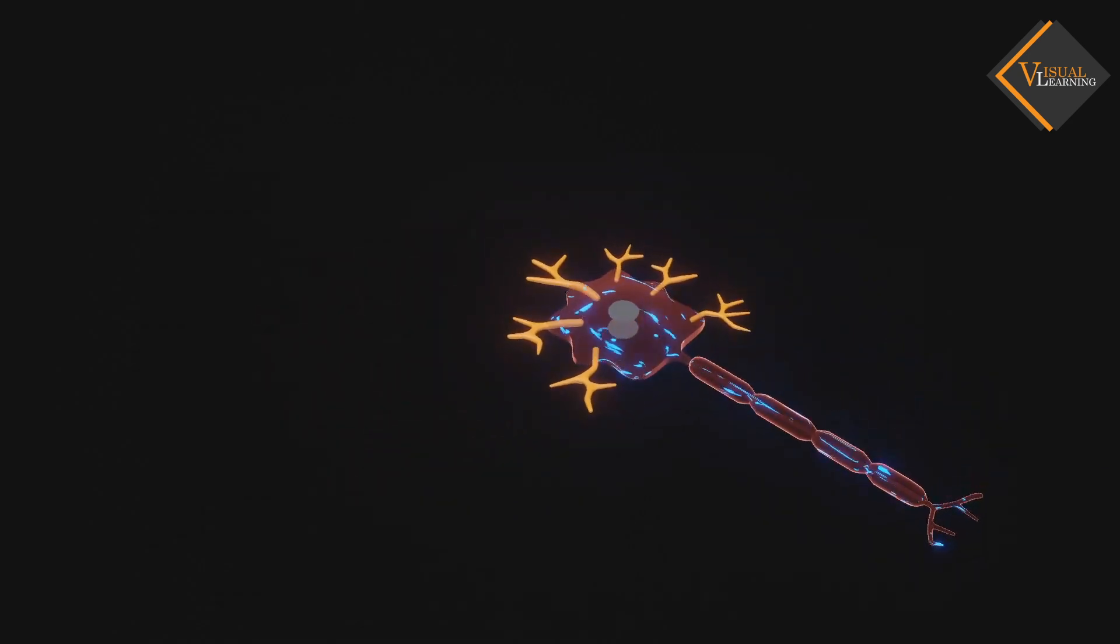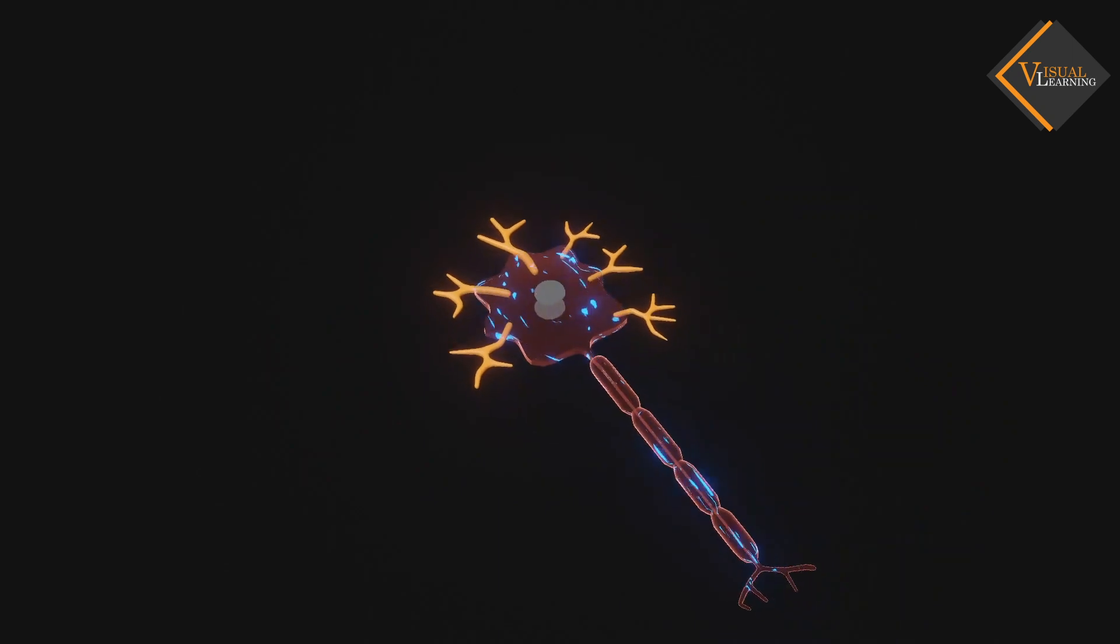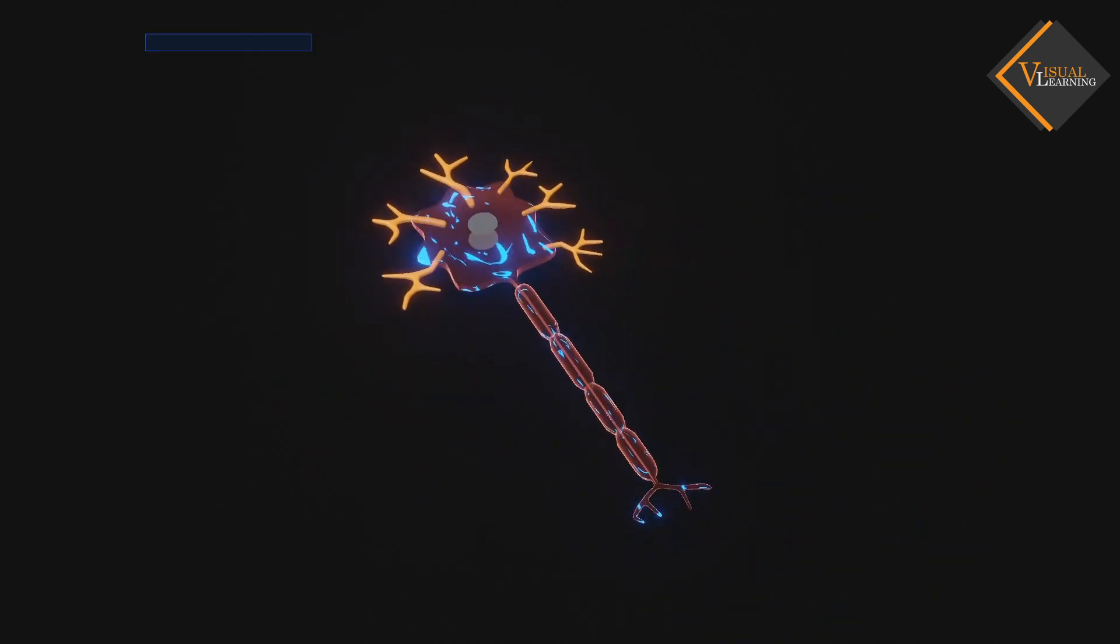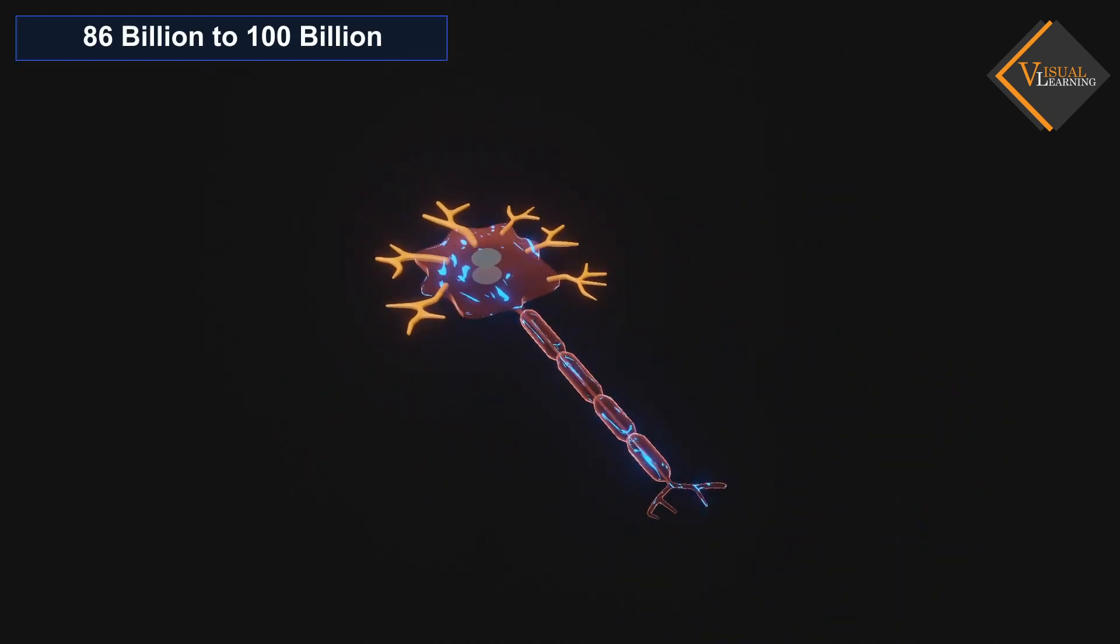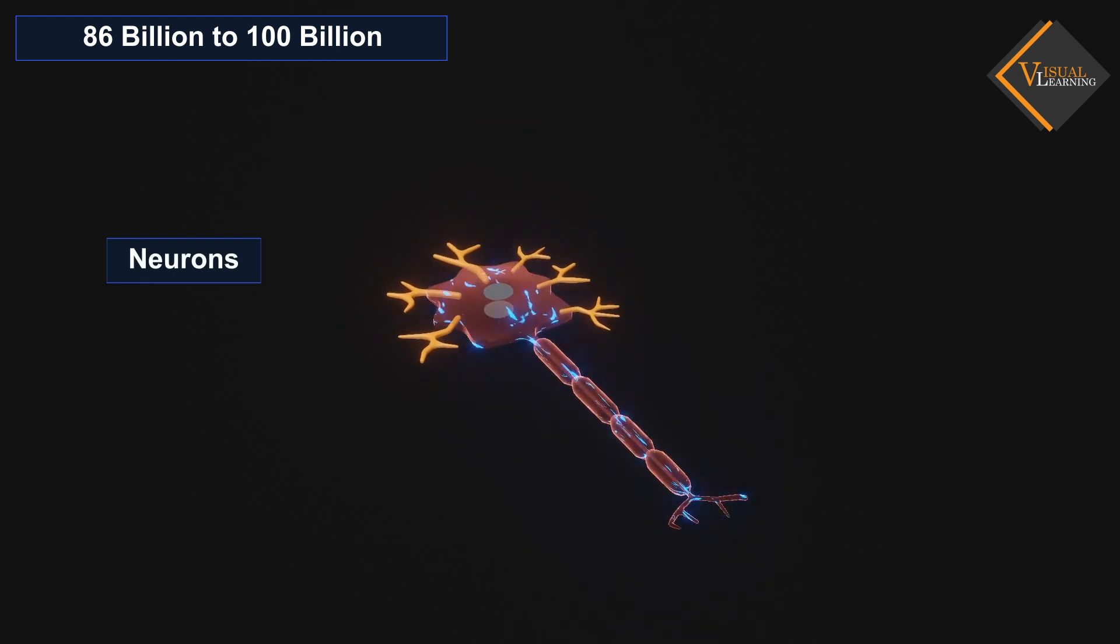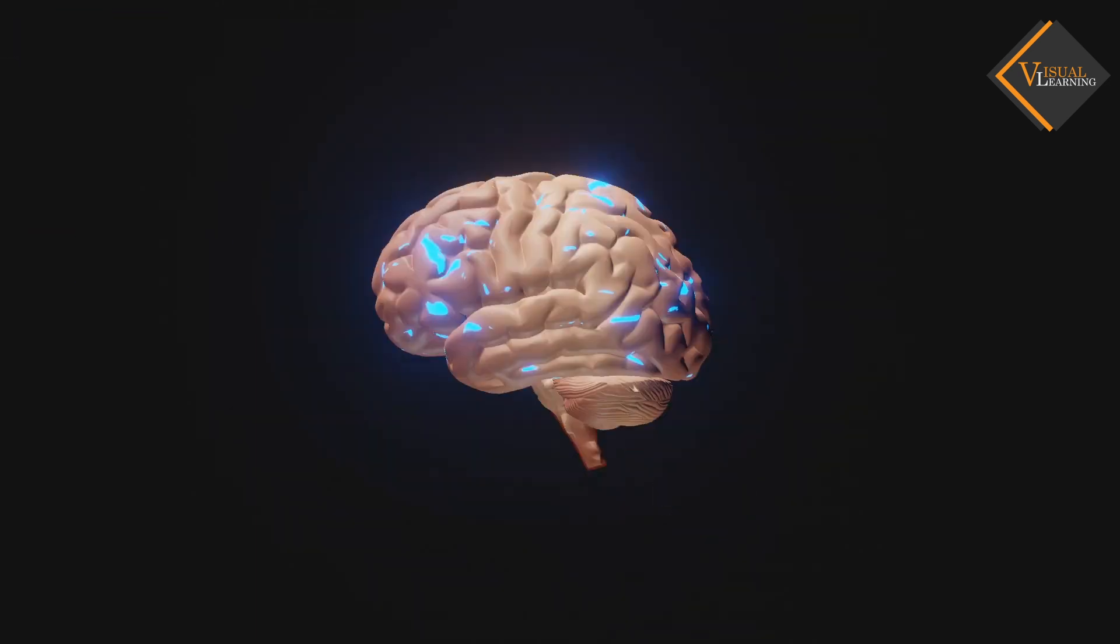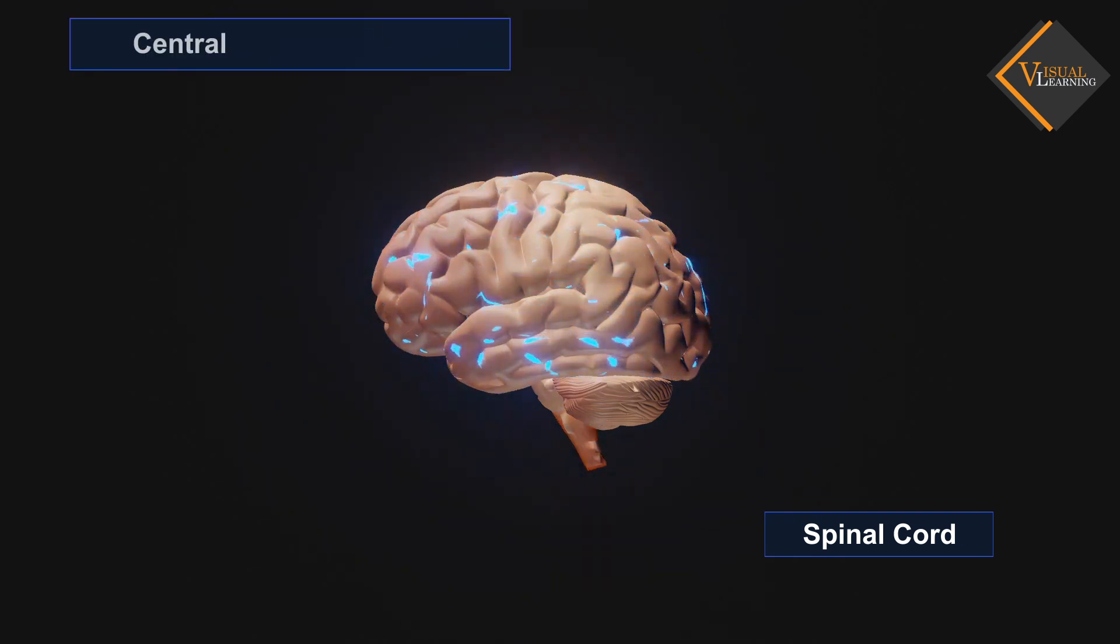Recent estimates have suggested that the brain contains anywhere between 86 billion to 100 billion neurons. The brain, along with the spinal cord, constitutes the central nervous system.